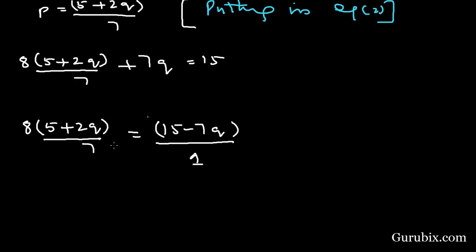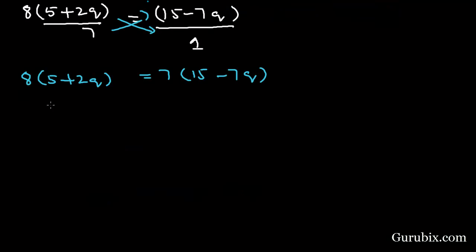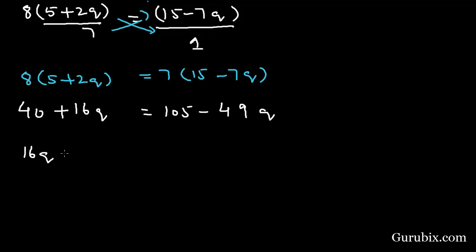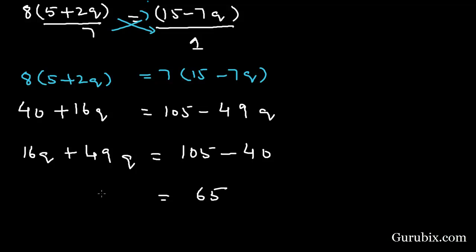Performing cross multiplication, we get 8 times (5 plus 2q) equals 7 times (15 minus 7q). Expanding: 40 plus 16q. Taking 49q to the left-hand side, we have 16q plus 49q equals 105 minus 40, which gives 65q equals 65. Therefore q equals 1.